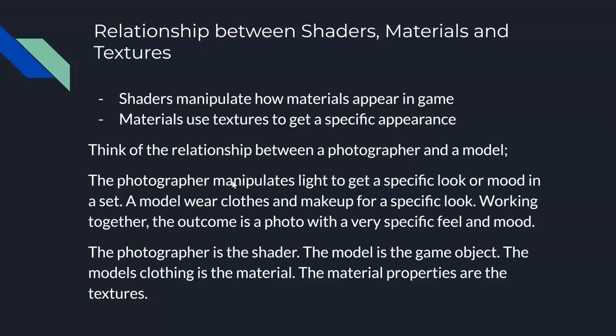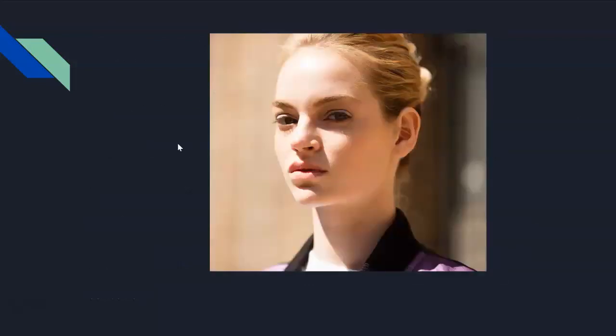The photographer in this analogy is the shader — the one manipulating the light to get a specific look. The model is the game object, and the clothing the model wears is the material. The material properties — like color, how tight it is, how wavy, rough, or smooth it is — are all textures. So a material has all these properties which are textures. Now you can see the relationship: shaders manipulate materials, and materials use textures.